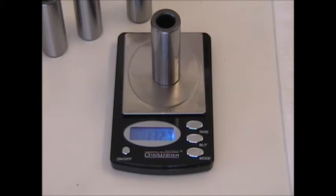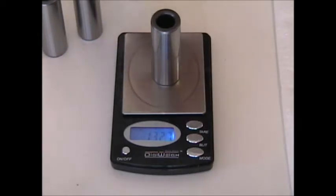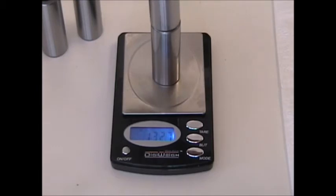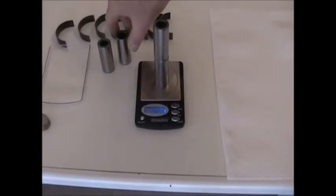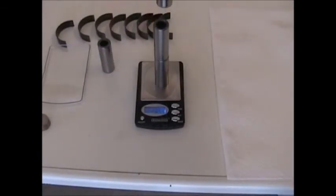Now we're going to check the linearity. So if I put two wrist pins on, they should be double that weight since they all weigh the same. So that should be 265.4. Let's just zoom back out. Now let's put three on. So we should get three times that, which is...